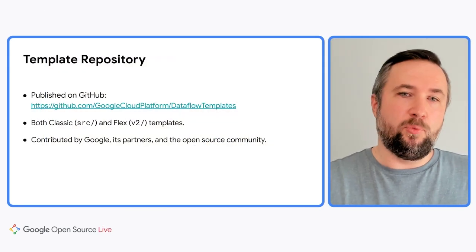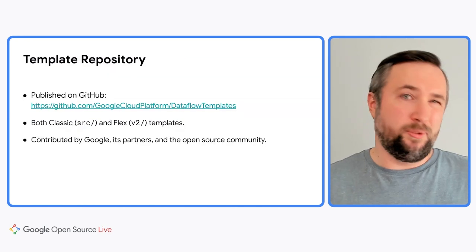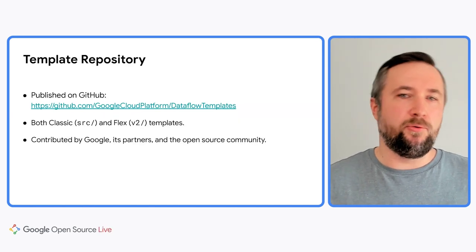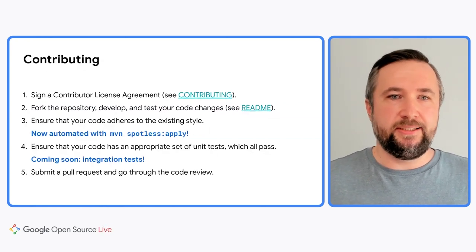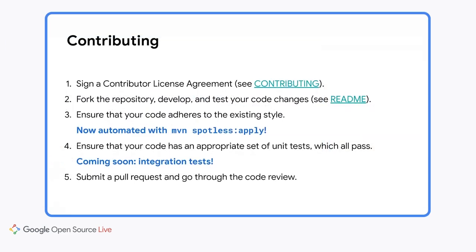Now, what does it have to do with open source? Here is the most interesting part. We have a repository published on GitHub that includes dozens of templates, both classic and Flex templates, all contributed by different parties — Google, its partners, and the open source community. Anyone can contribute to this repository, and you are welcome to share your template with the community. Contributing is relatively easy: you have to sign the license agreement, then you fork the repository, you develop your template, you test it, and eventually you submit a pull request and go for the code review. One thing that is missing in this workflow is integration tests. At the moment, they exist, but only in an internal Google repository. We are going to move them to GitHub soon, so stay tuned.